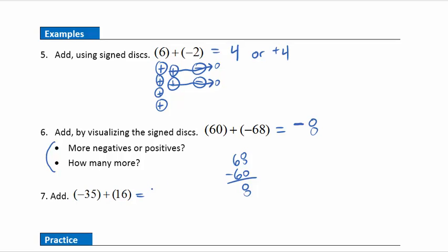Example seven: more negatives or more positives? We have more negatives. How many more? Let's look at thirty-five minus sixteen. We borrow from the three, making it a two and the units a fifteen. Fifteen minus six gives nine, and two minus one gives one — so we had nineteen more negatives, giving an answer of negative nineteen.